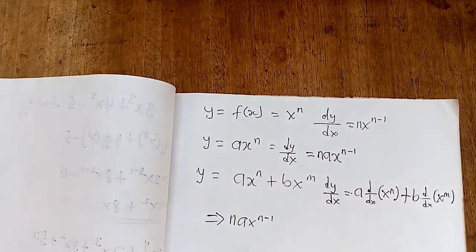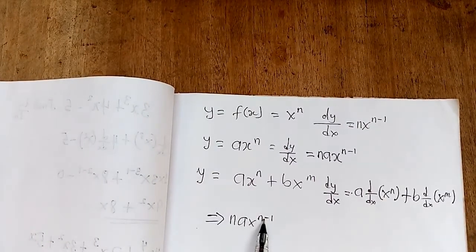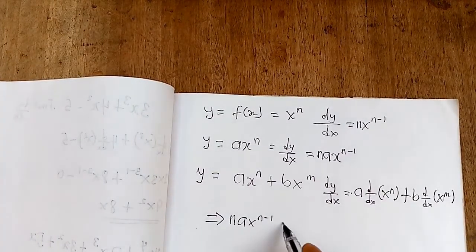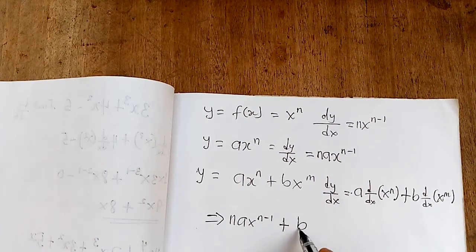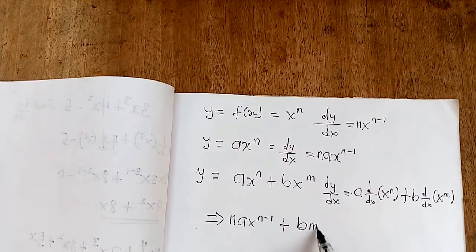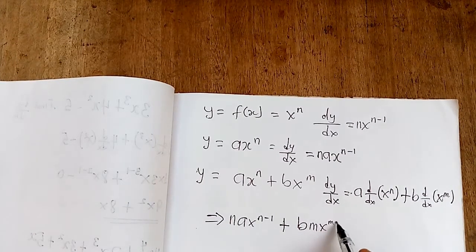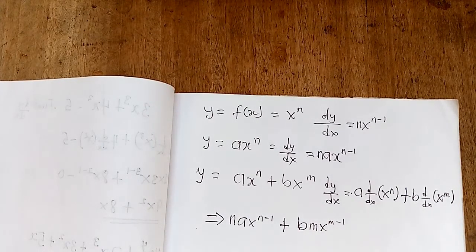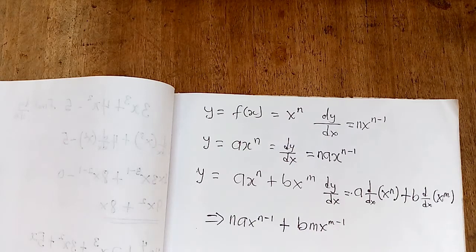We subtract 1 from the exponent, then move on to the second term. The constant b stays, and m falls back and multiplies x, giving us mbx^(m-1). This is the third rule: when terms come together, we differentiate them separately and combine the results.